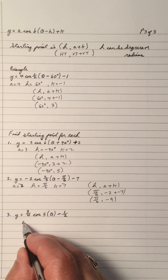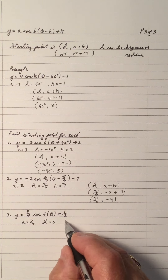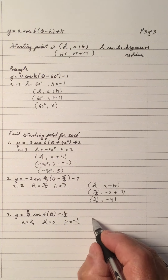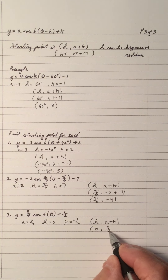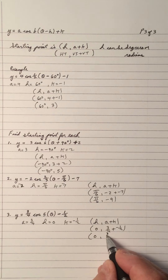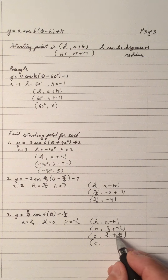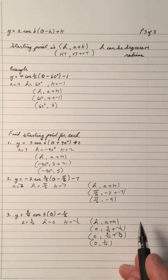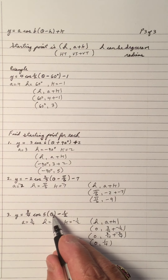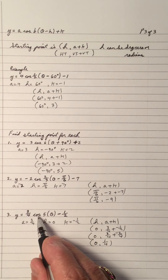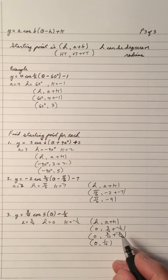For the last example, A is 3 quarters. For H, notice there's no plus or minus inside the bracket, so H is 0. K is negative 1 half. Using H comma A plus K: H is 0, A is 3 quarters, plus negative 1 half. Common denominator is 4, so 1 half is 2 over 4. 3 quarters minus 2 quarters is 1 quarter. There's nothing inside the bracket, so H is 0. Put 0 in: 5 times 0 is 0, cosine of 0 is 1, 3 quarters times 1 is 3 quarters, 3 quarters subtract 1 half equals 1 quarter, which is the starting point.